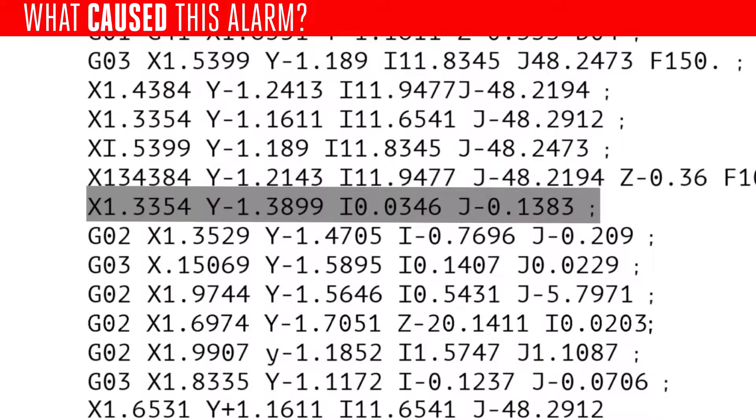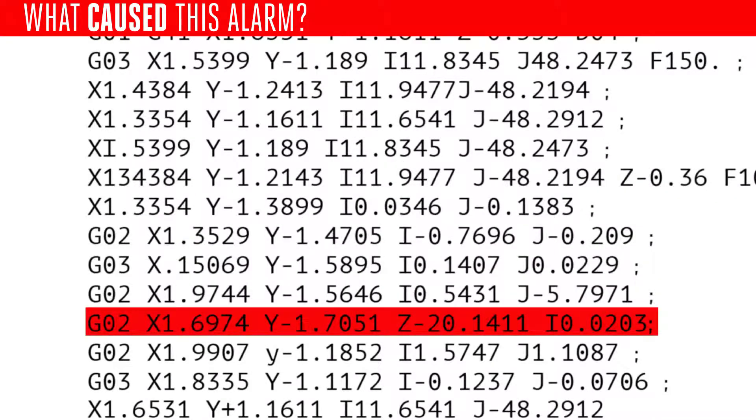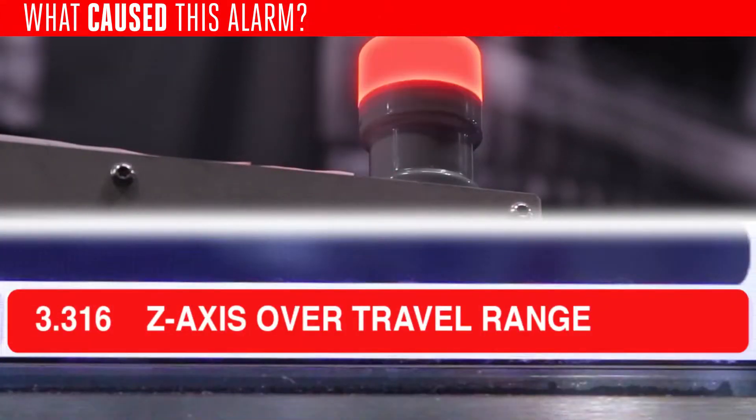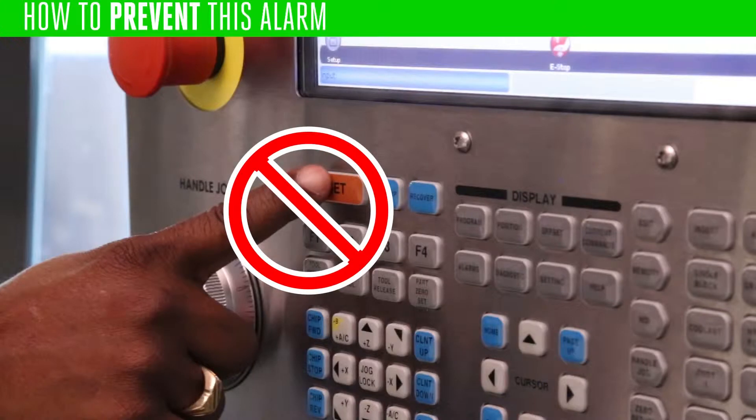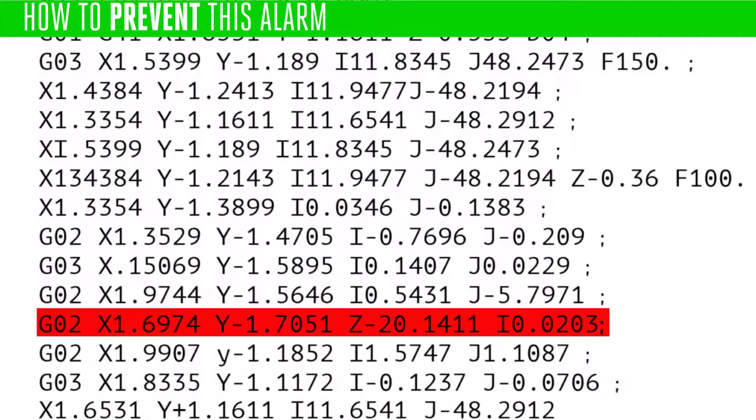If a programmed move is outside the established range, the control generates alarm 3.316. Before you push reset to clear this alarm, take a look at the highlighted code.